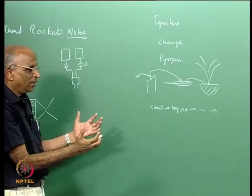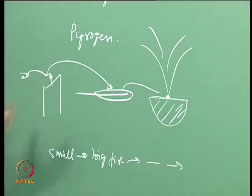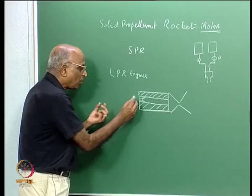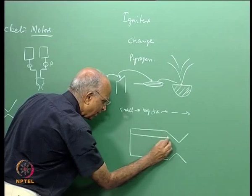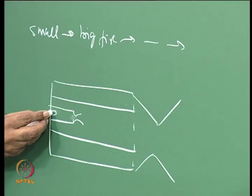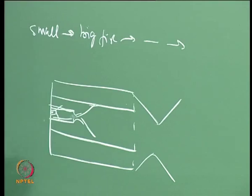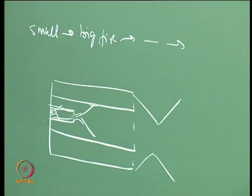In solid propellant rockets, we sometimes use a small rocket motor as the igniter. This small rocket motor has its own nozzle, its own igniter — a squib — and so a small fire makes a bigger fire, which makes a still bigger fire, which ignites the pyrogen, which generates enough energy to ignite the main rocket. So a pyrogen is a small rocket that ignites the main rocket.